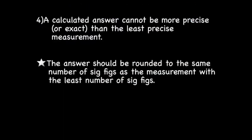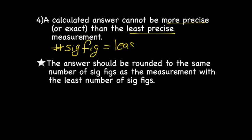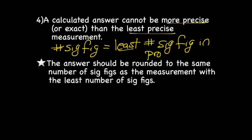A calculated answer cannot be more precise than the least precise measurement. That means the number of sig figs needs to equal the least number of sig figs in your problem. The answer should be rounded to the same number of sig figs as the measurement with the least number of sig figs. And that's it for our review on sig figs.